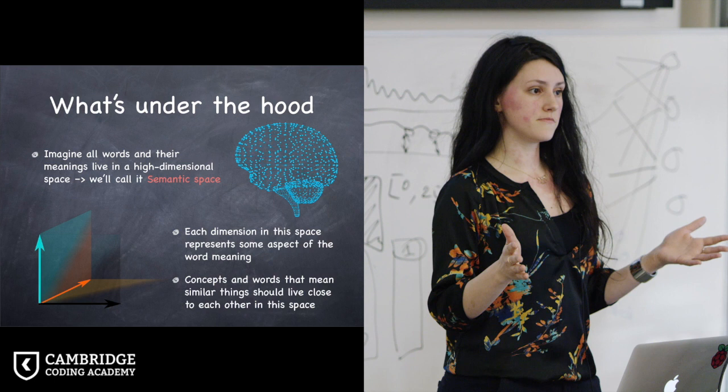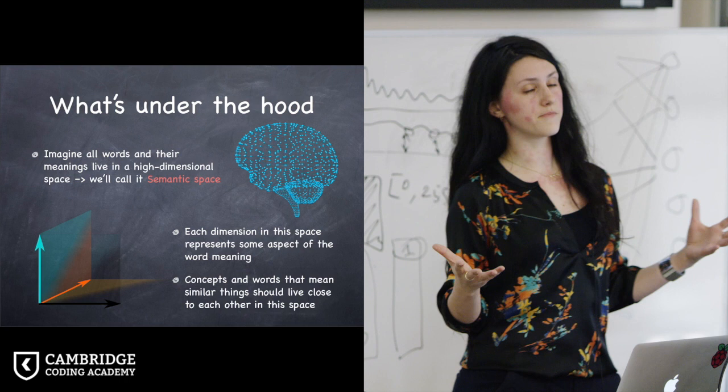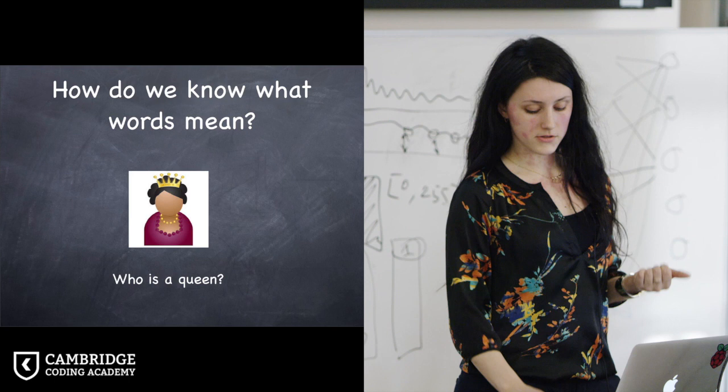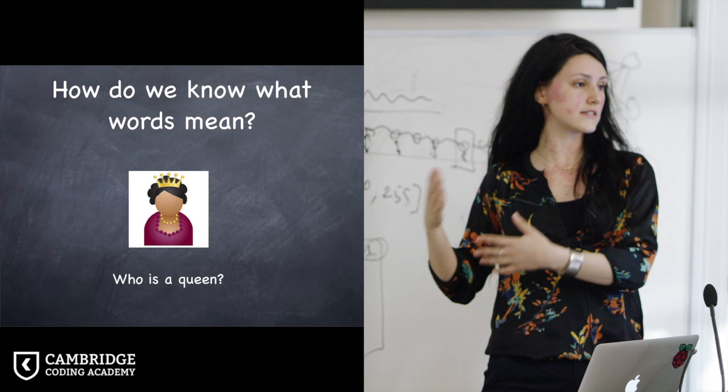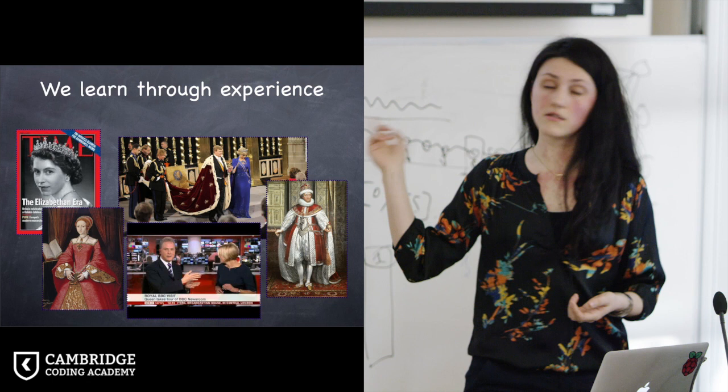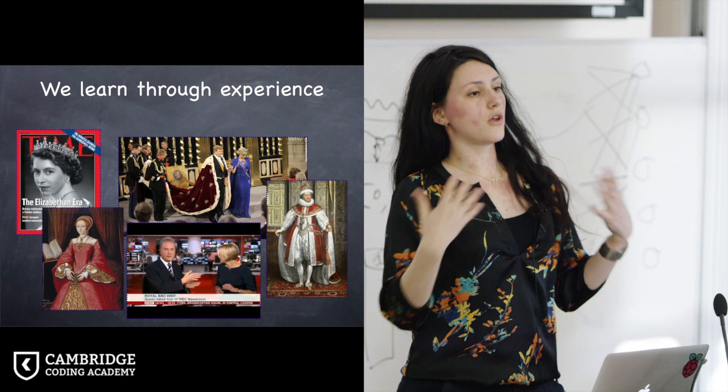That's basically what the machine is doing. Each dimension in this space encodes some bits or some aspects of the meaning. And also, we want to have the similar concepts in this space to live closer together. If we think about how we humans derive the meanings and get to know what a queen is, we are basically exposed to a lot of examples throughout our lifetime. We might see the kings and queens on the news. We might read some stories about them. We might read the news again. We might hear about them.